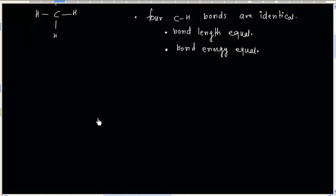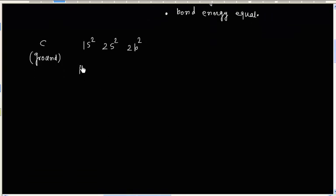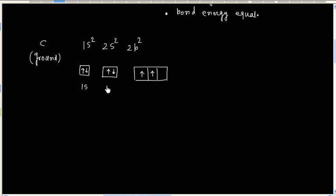Now, we know the ground state configuration of the carbon atom: 1s2, 2s2, 2p2. We can show the same using a box diagram. We have 2 electrons in the p orbital. So this is 1s, this is 2s, and this is the 2p orbital.